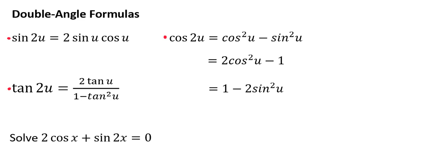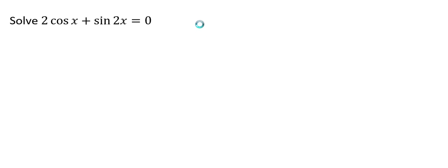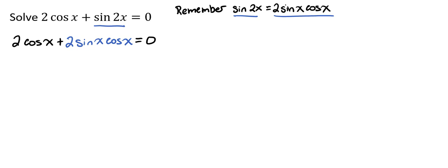We're going to begin by rewriting the equation so that it involves functions of x rather than 2x. To do that, we're going to need the double-angle formula for sine, which gives us 2 times the cosine of x plus 2 times the sine of x times cosine of x equals 0.